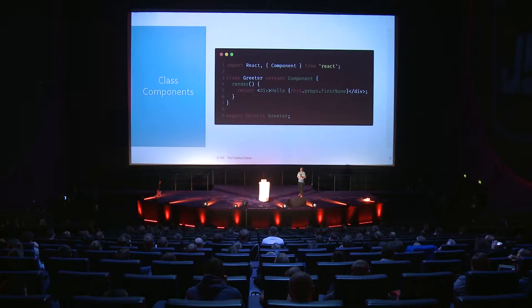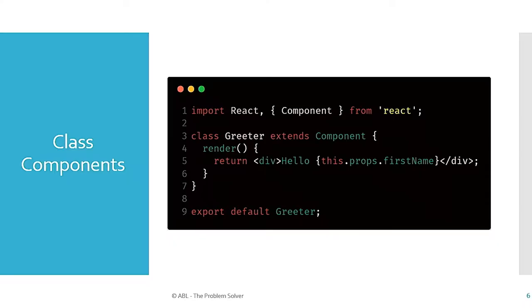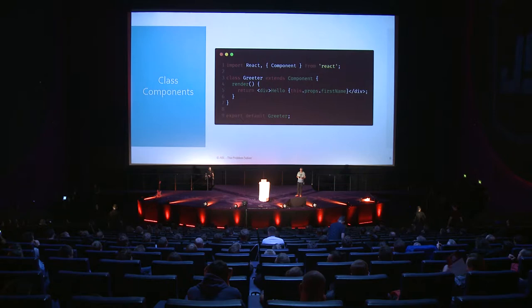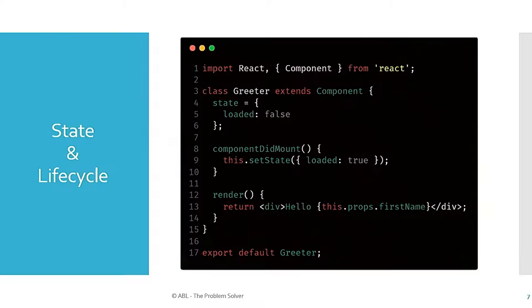After some time, the React team started shipping class components. We could create a class extending Component — using normal ECMAScript 2015-style classes, compiled down to ECMAScript 5 for older browsers. That was really nice. But we did lose something along the way: no more mixins, no auto-binding. That was gone, but it wasn't a huge problem — we got used to it, and everything was great.